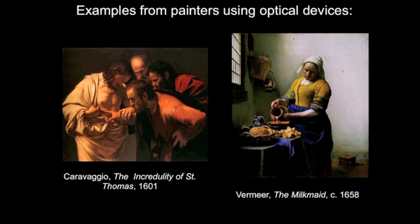Images started to become much more three-dimensional; shape and volume were more defined, replicating how we actually perceive space. Two painters we've been discussing are Caravaggio on the left and Vermeer on the right. With lenses and the camera obscura, there's a dramatic shift from lights to darks, making forms seem very three-dimensional and realistic.